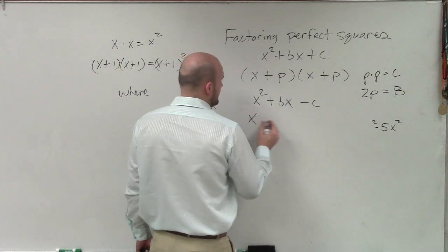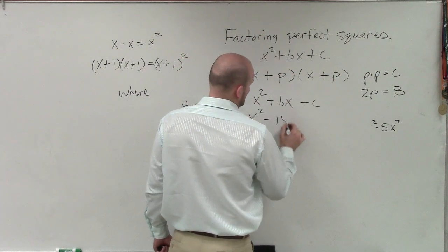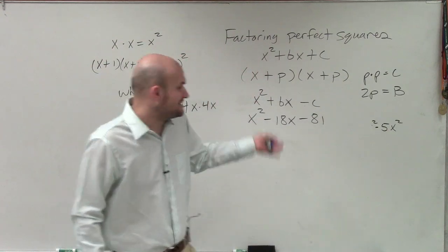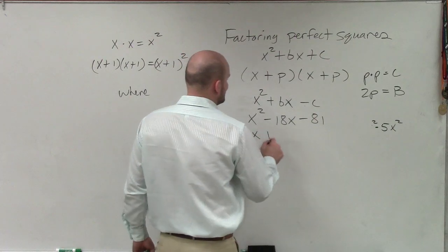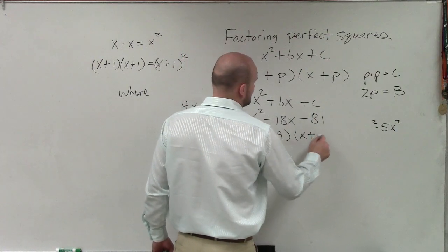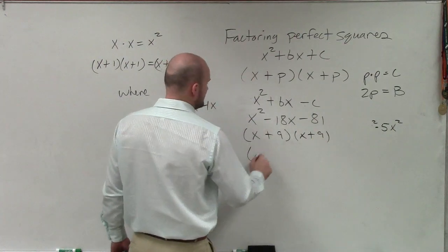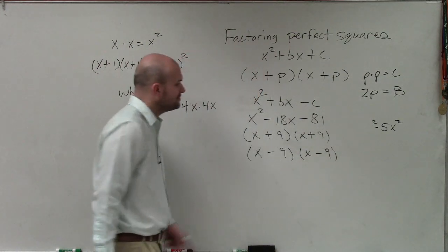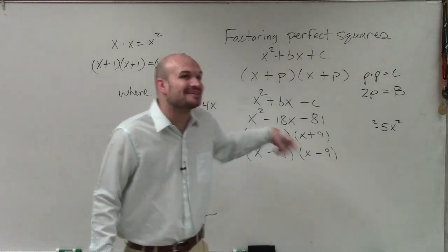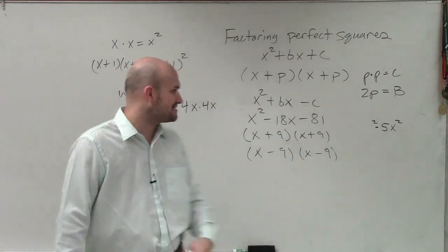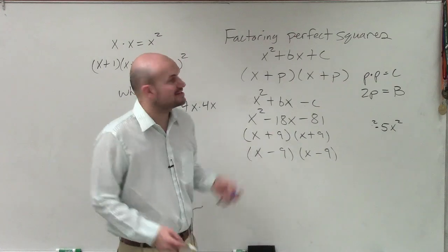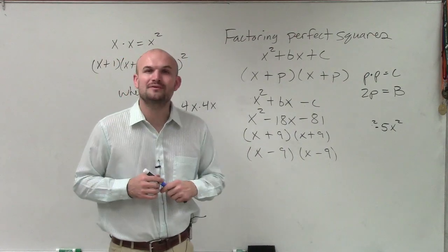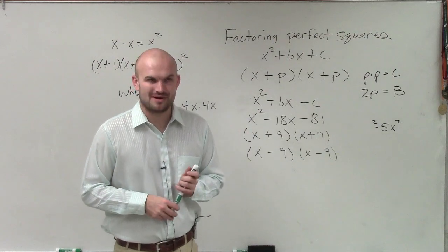For example, x squared minus 18x minus 81. Well, you might say, 9 times 9 gives me 81, right? But you can't write that as x plus 9 times x plus 9. That's not going to give you 81. Or x minus 9 times x minus 9. The only way you could do that would be negative 9 plus 9, but then that's going to be a difference of two squares and not what we're going to be looking for as far as a factoring of perfect squares. So there you go, ladies and gentlemen. That is a nice little brief overview of factoring using perfect squares. Thanks.